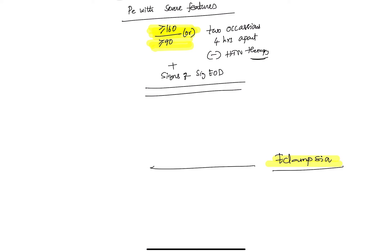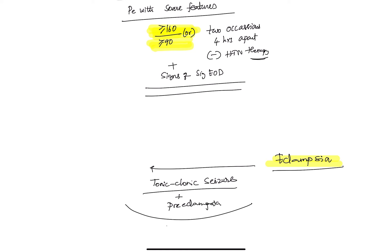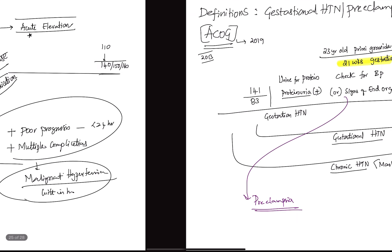Eclampsia is the development of tonic-clonic seizures in a patient with preeclampsia. However, there should be no history of neurological disorders — if the patient is already an epileptic or has a space-occupying lesion, abscess, electrolyte abnormalities, or any other cause of seizures, those must all be ruled out first. If the seizure is due to hypertension with no other neurological condition, then we call it eclampsia. This concludes our discussion on the important topic of definitions related to hypertension.